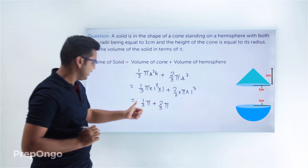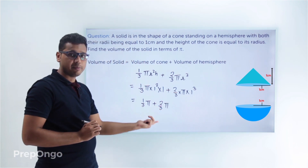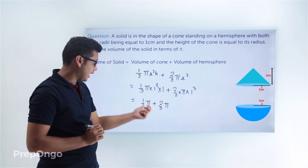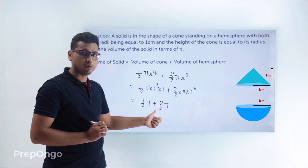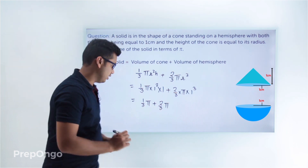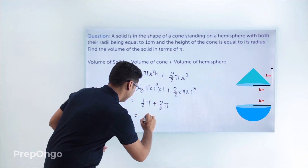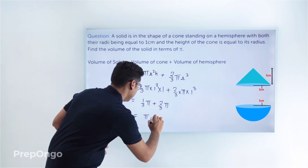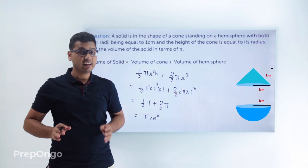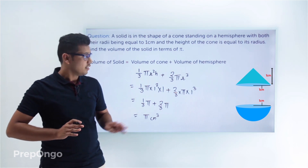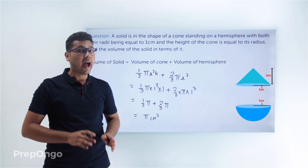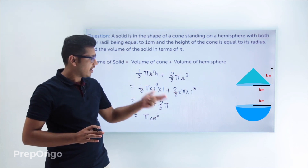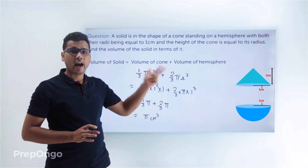Now we add these two by taking LCM. The LCM of 3 gives us (1 + 2)/3 = 3/3, which comes out to be π only. So the volume of the solid is π centimeters cubed. We found the volume of this solid by adding up the volumes of the hemisphere and the cone.